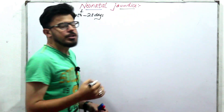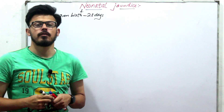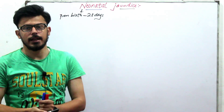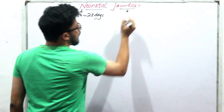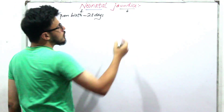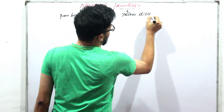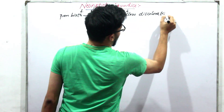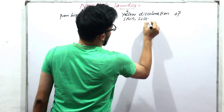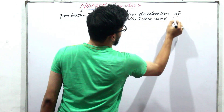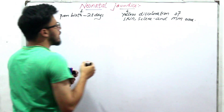And what is Jaundice? Jaundice means when serum bilirubin level exceeds in blood. So as a result of that, there is yellow discoloration of skin, sclera, and mucous membrane. So that is Jaundice.